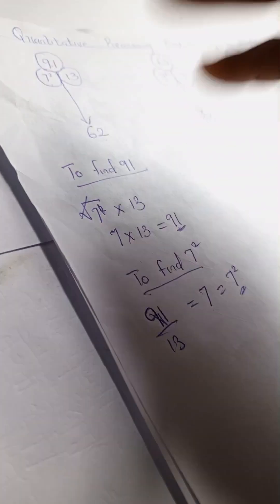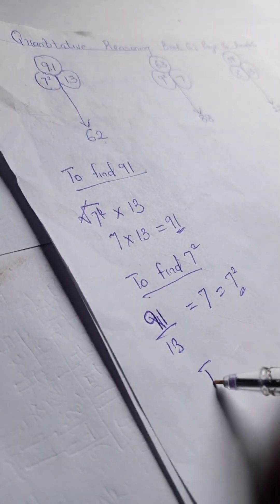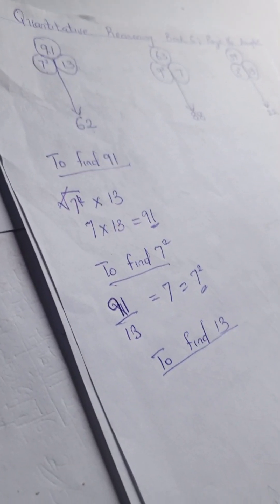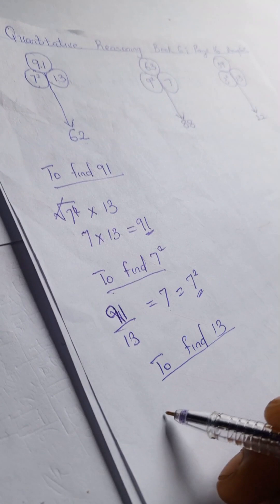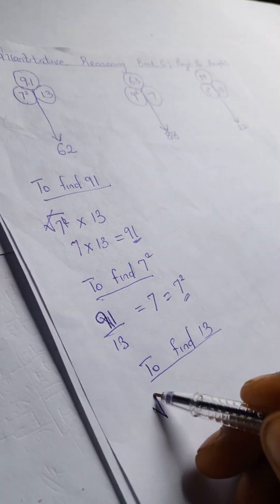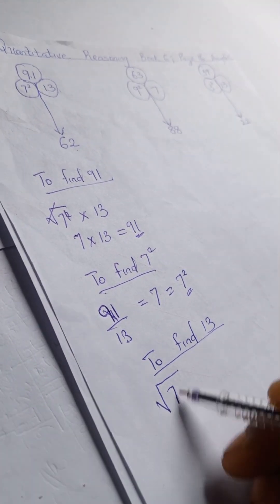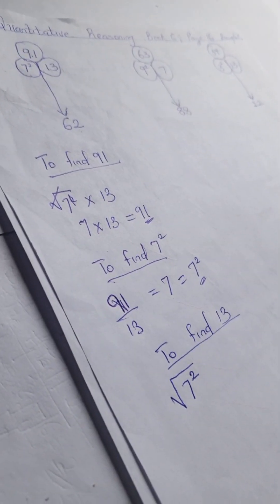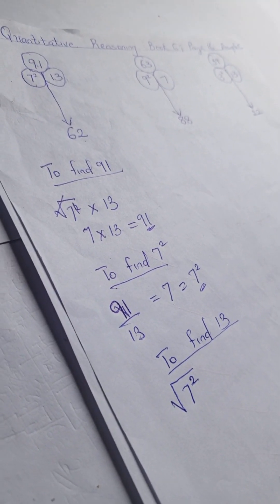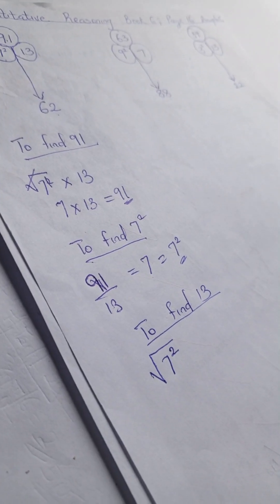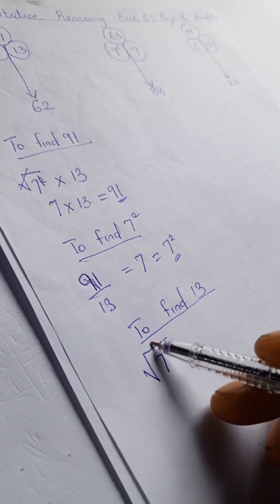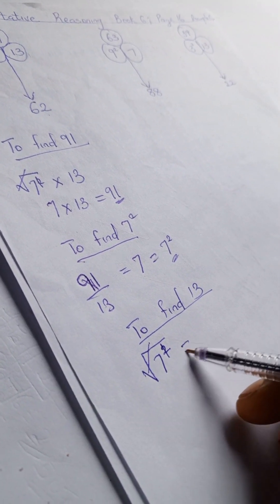So we're going to find 13. We're going to have square root of 7 squared, and when you calculate square root of 7 squared, now in the rule of mathematics, square root will cancel out the square in this case. So the square here will cancel out our square root, so we have our 7.